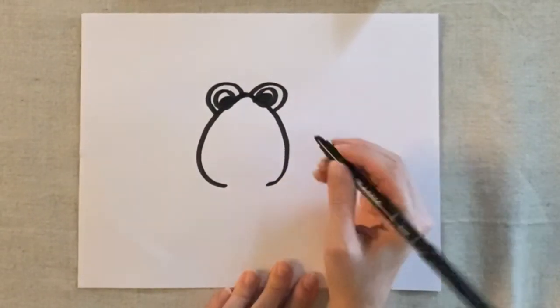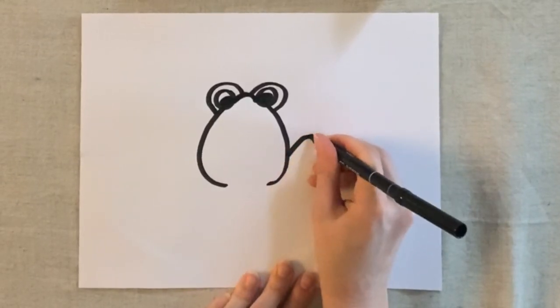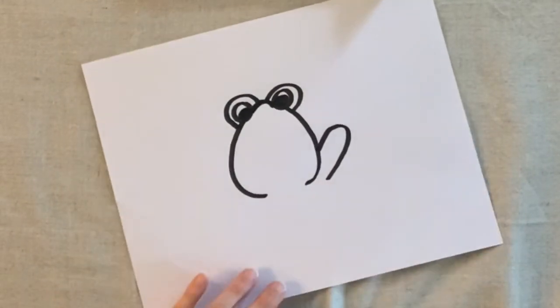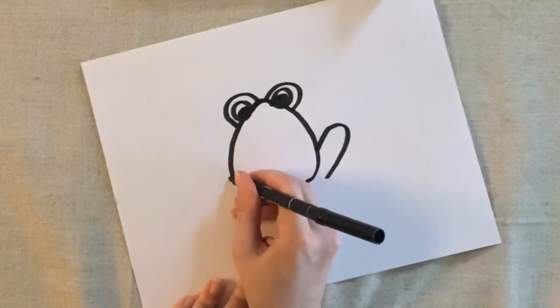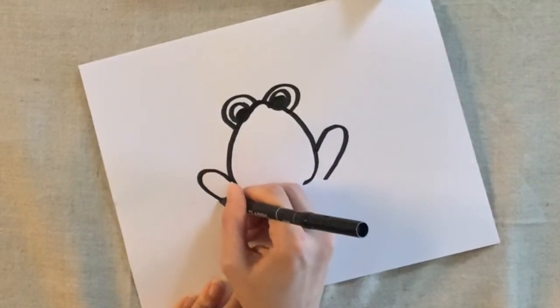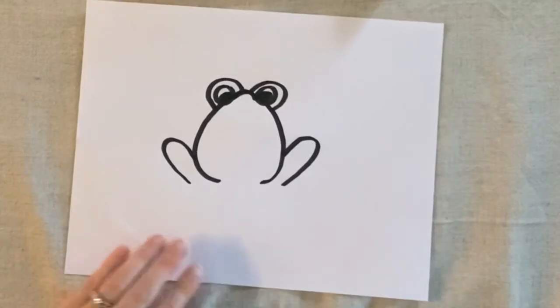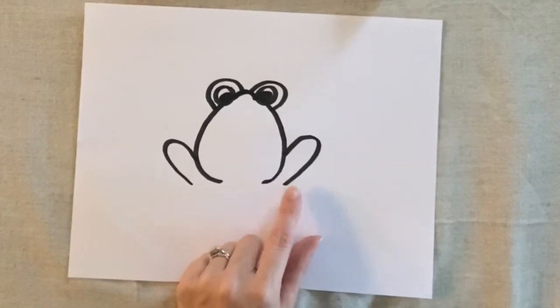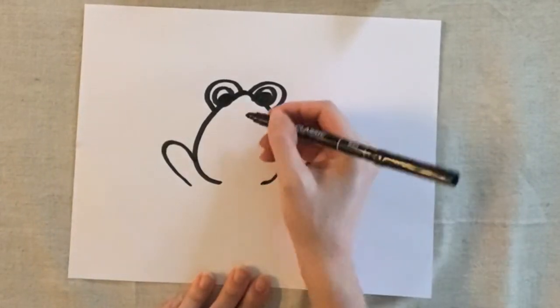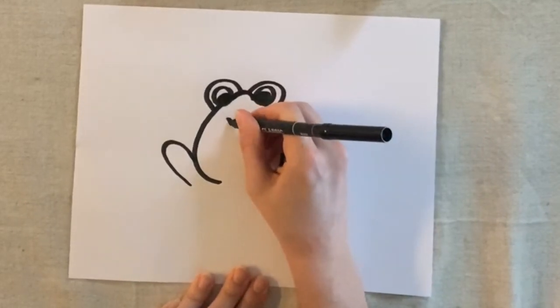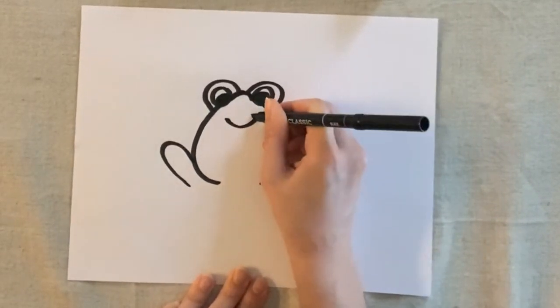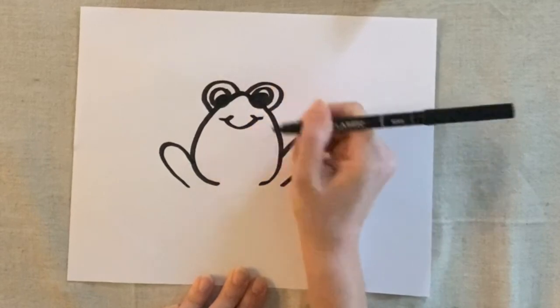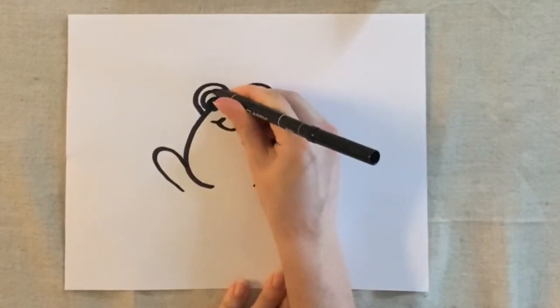All right, next I'm going to add his legs. I'm going to draw a big kind of curved rainbow line. I'm going to do the same for the other side. So I didn't make this connect to anything, I just left it open at the bottom. Next we're going to work on his mouth because that's just a cute and easy thing to do. It's a cute little smile.